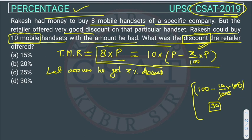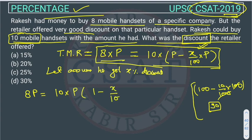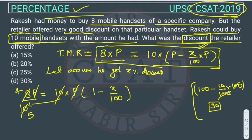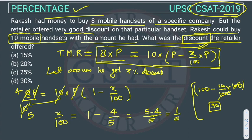Now we solve the equation: 8P = 10 × P(1 − X/100). We can take P common and cancel it from both sides, giving 8/10 = 1 − X/100, which simplifies to 4/5. Taking 1 to the other side: X/100 = 1 − 4/5 = (5 − 4)/5 = 1/5. Therefore X = 100/5 = 20.